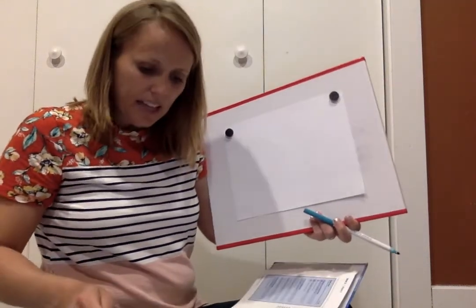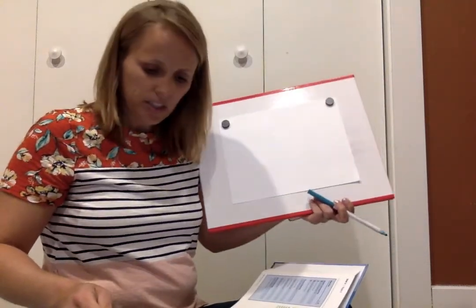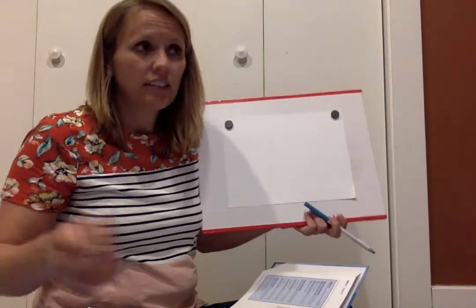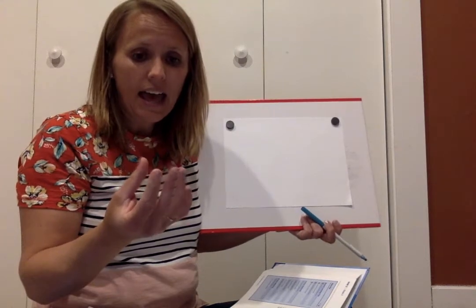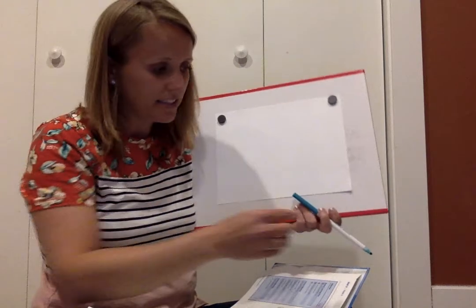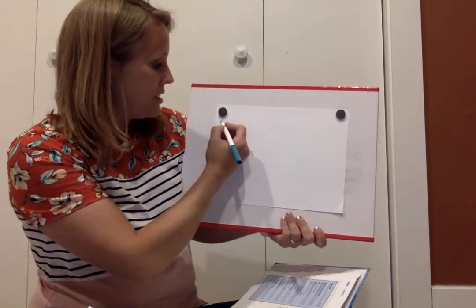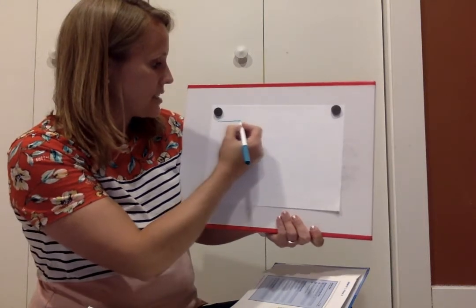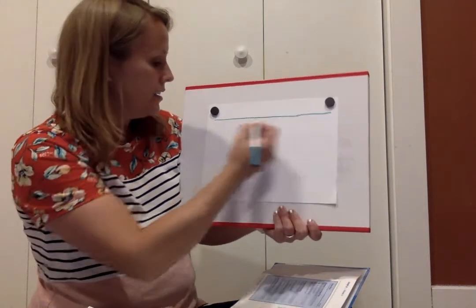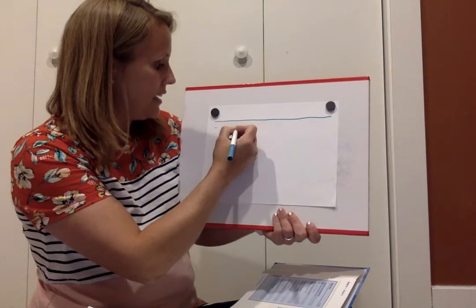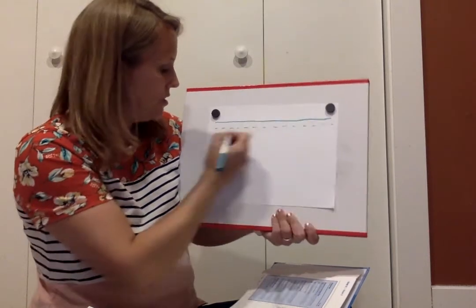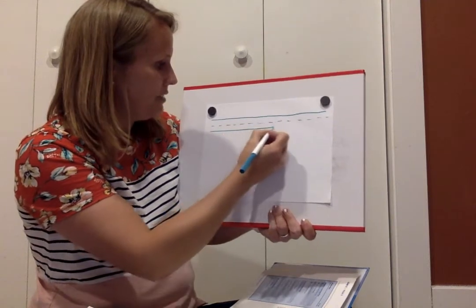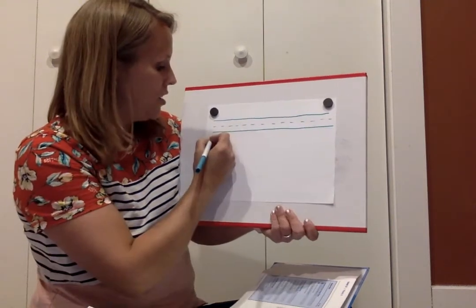Okay, let's write the word vet. So let's tap it first. V-E-T. Vet. Okay, I need to make my lines. So I have my skyline, plain line, grass line, and worm line.